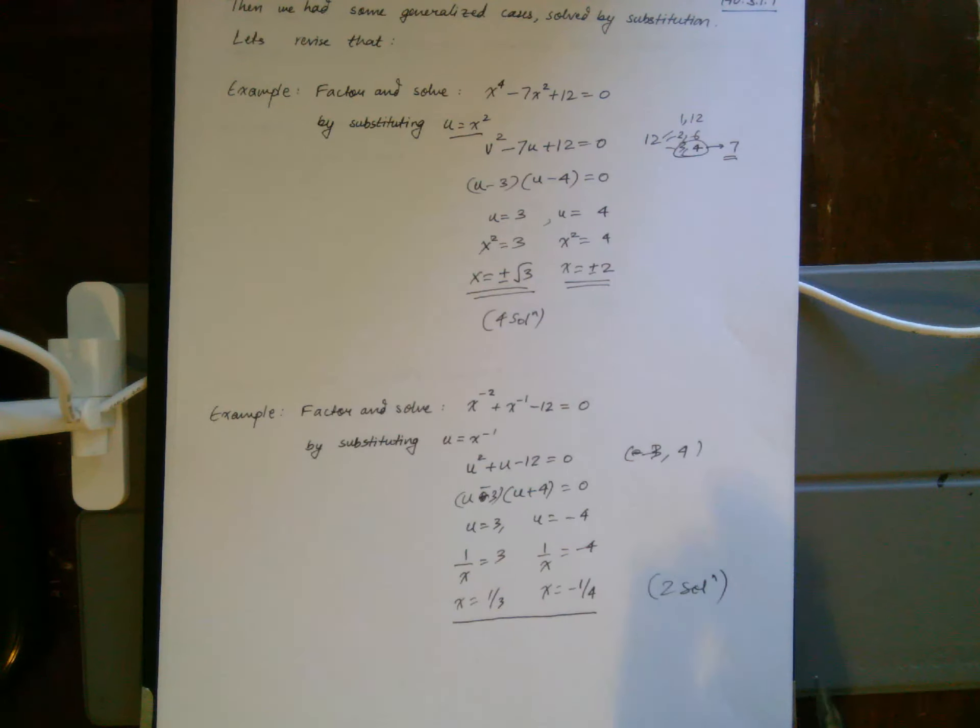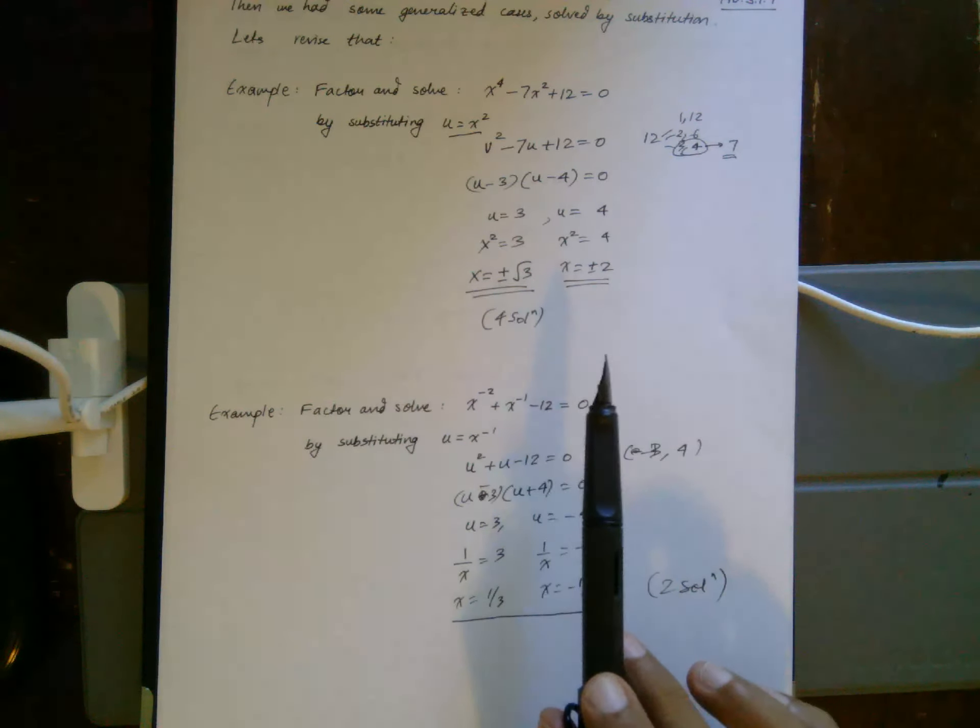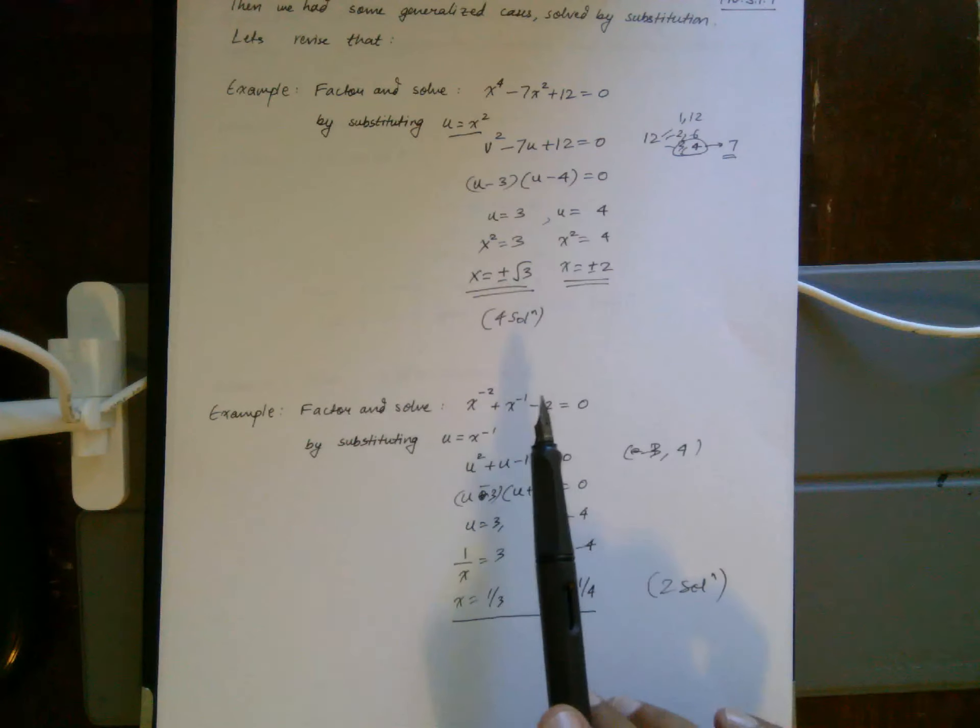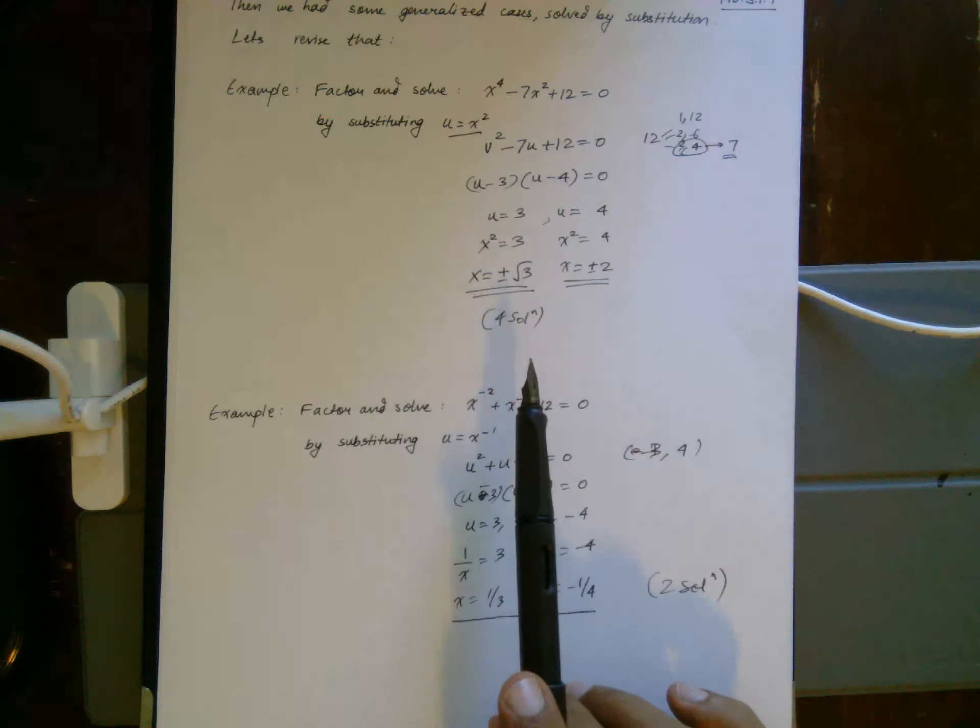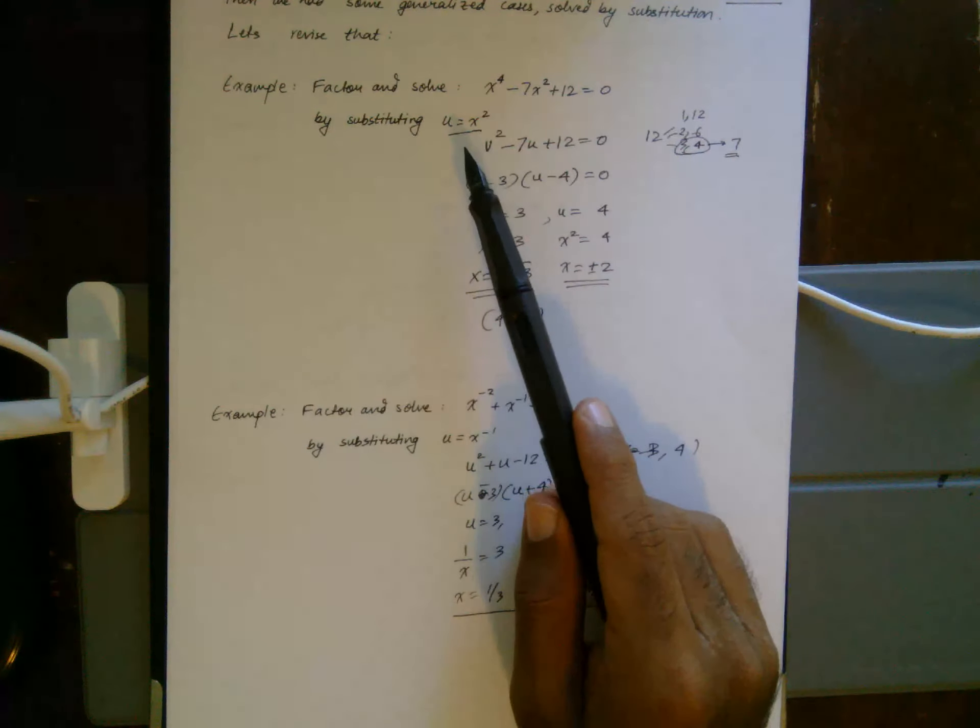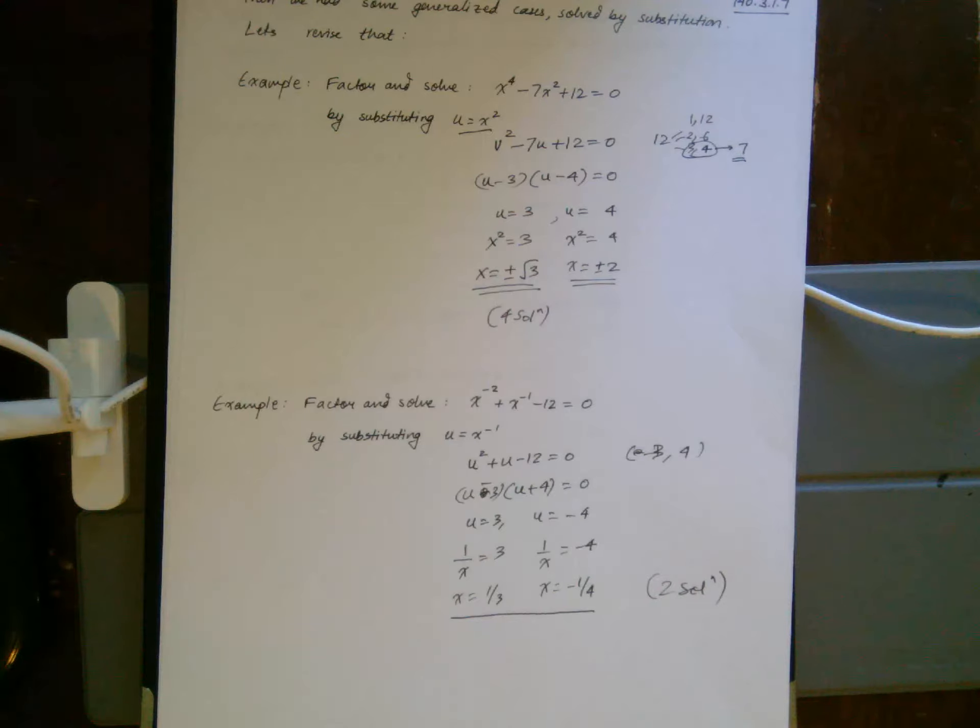The takeaway here is you can have quadratic equations, you can have things that are seemingly more complicated, but if you observe a pattern and make a relevant substitution, you can break it down into a trinomial which you already know how to factor.